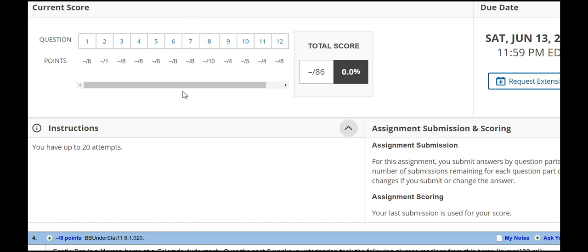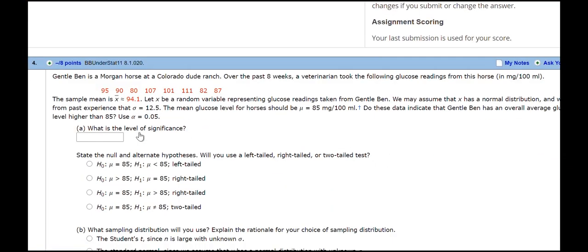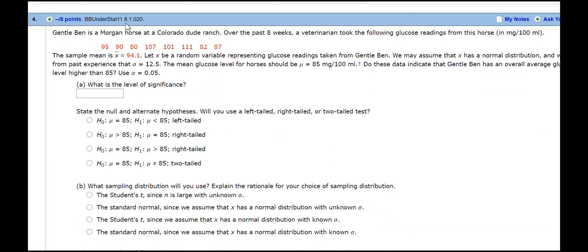Greetings, my statistics friends. This is from Chapter 8, and we're going to work out problem number 4 from our homework assignment, and that corresponds to Section 8.1, Homework Problem 20 from our book. In this particular case, we are given some information about the glucose readings from a horse, and so here are the data points, 1, 2, 3, 4, 5, 6, 7, 8 data points.